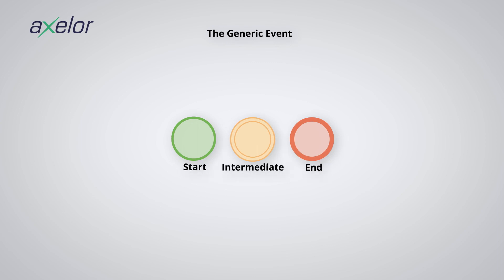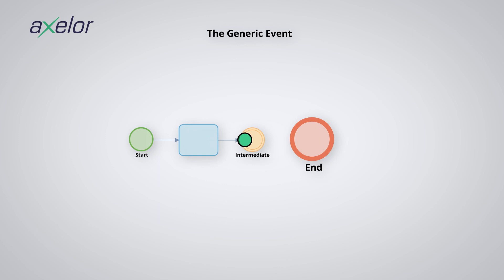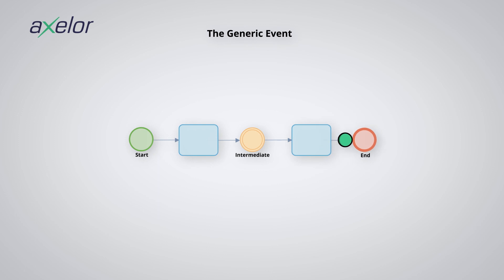For start events, they are used for non-anticipated triggers. And like all start events, a token is created. The use of this category of events for intermediate events indicates to the reader a state which has been reached. End events assimilate a token, and in the case of the assimilation of the last token, the process ends.